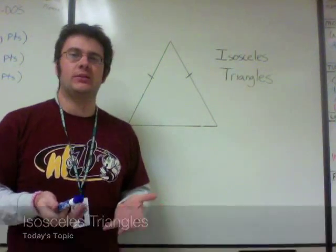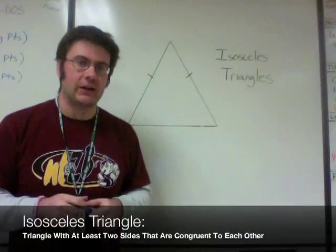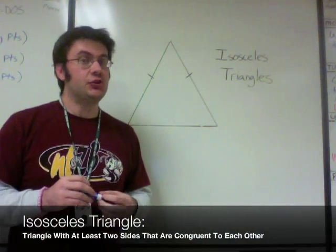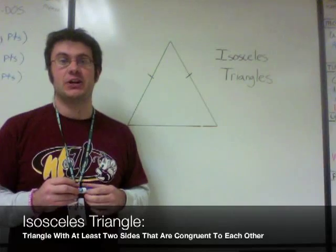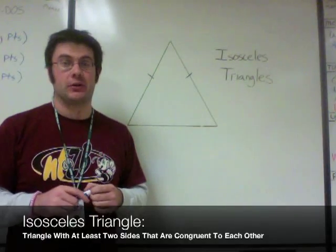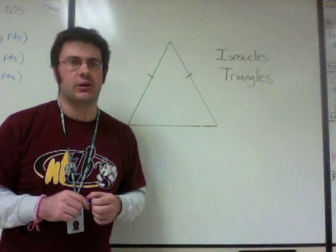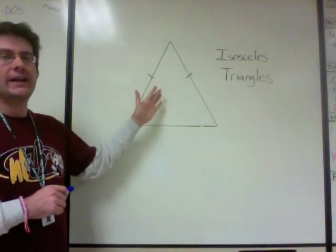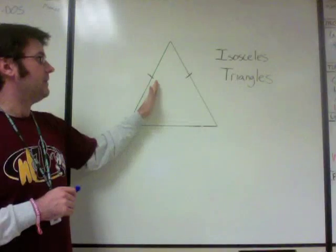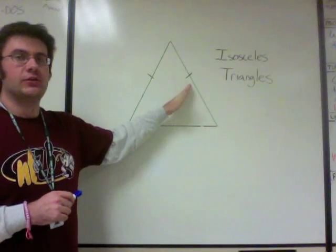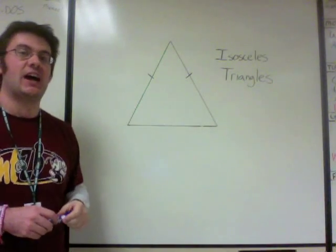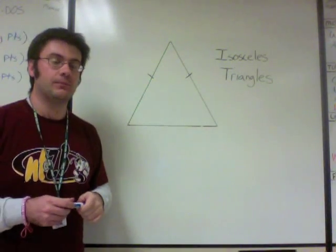An isosceles triangle is a triangle that has at least two of its sides congruent to each other. Let's take a look at our diagram here. We have a triangle, and this side is congruent to this side, so that makes it an isosceles triangle.